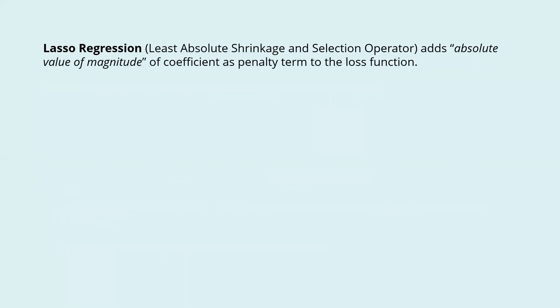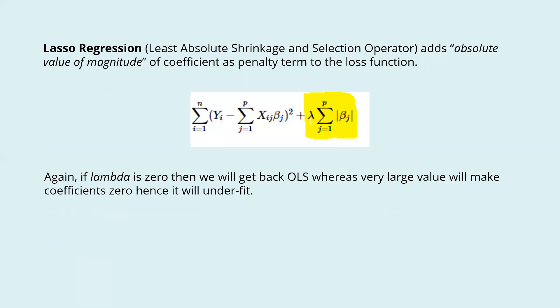Lasso regression adds the absolute value of the magnitude of coefficients as a penalty term to the loss function. Again, if lambda is zero, we get back OLS, whereas a very large value will make coefficients zero, hence it will underfit.